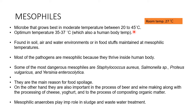Don't get confused. That is the reason why most mesophiles are pathogenic, as they can grow easily in the human body. These mesophiles are found in soil, air, water environments, or in foodstuffs maintained at mesophilic temperatures or at room temperature. Even at room temperatures these bacteria can grow, but the optimum temperature is 35 to 37 degrees Celsius.